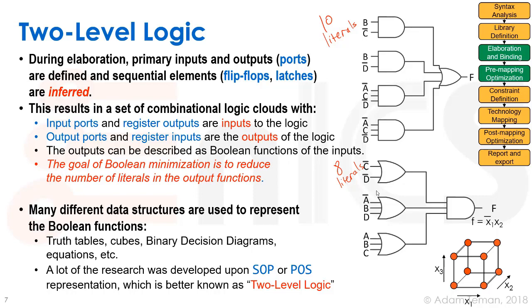Truth tables we know about, and we'll learn a bit about binary decision diagrams (BDDs) in this lecture. There's also something called a cube — another type of representation. You can also do analytical things with equations. Two-level logic is what we're discussing now, and the reason is that we can take the combinational logic between registers, between inputs and outputs, represent it in two-level logic, and start to reduce it.